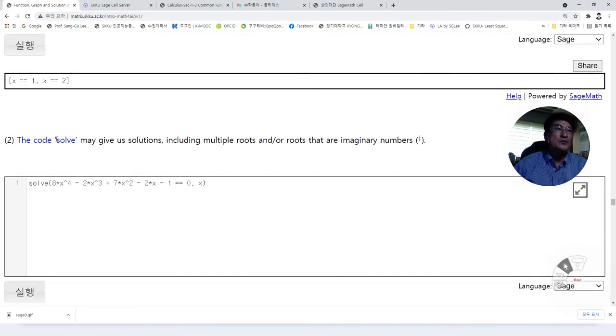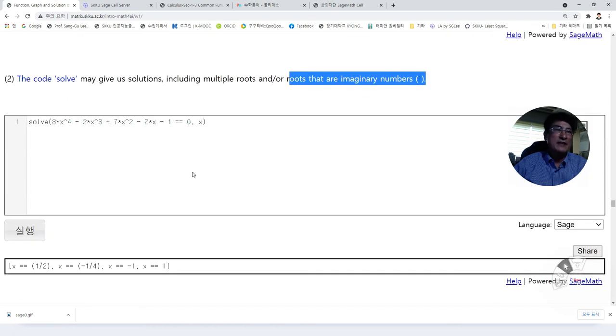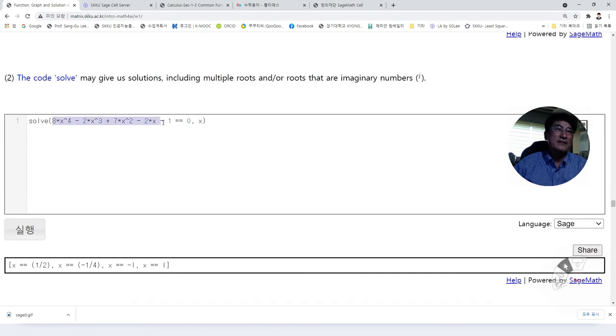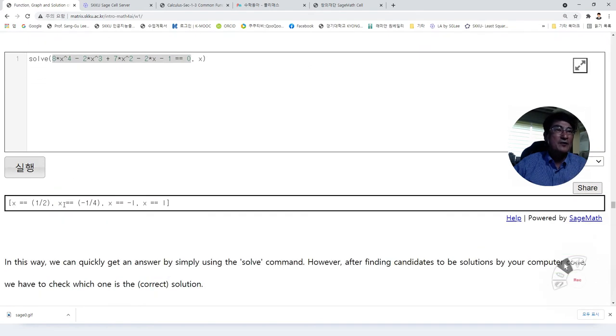This code solve may give us solutions including multiple roots or including imaginary numbers. For example, the second problem, the fourth degree polynomial. Then we have four solutions like this. We have four distinct solutions.